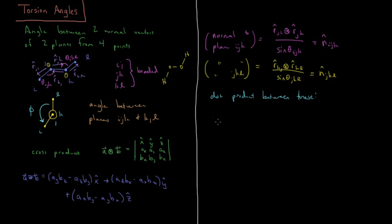So dot product between these, what we're going to end up getting, similarly to how we defined the previous result for bond angles, we're going to get phi I, J, K, L equals the arc cosine of the dot product N-hat I, J, K dot N-hat J, K, L.